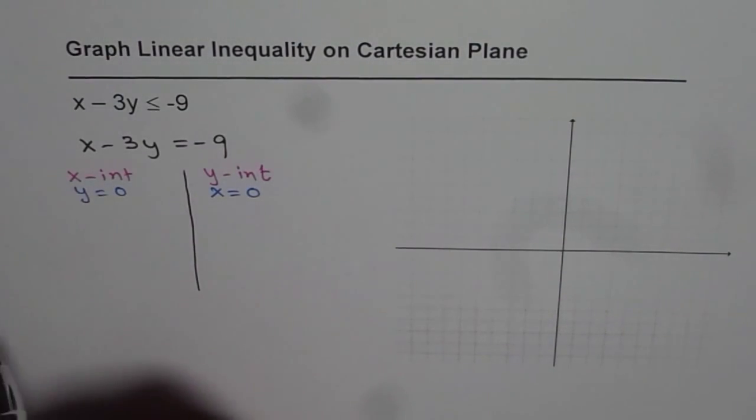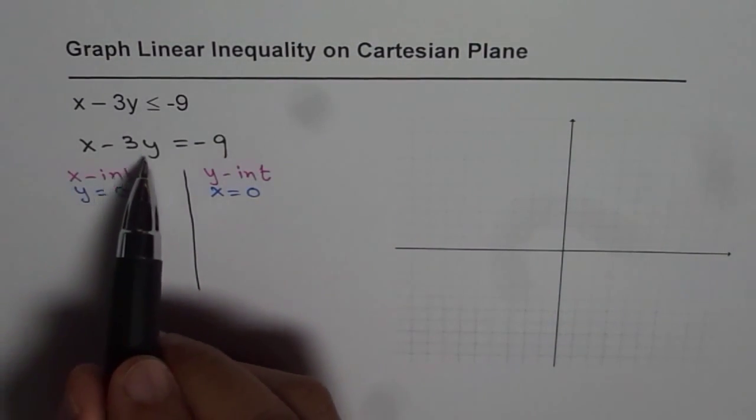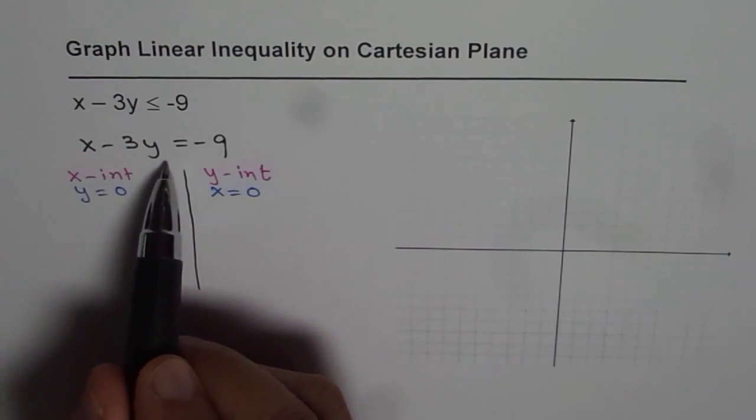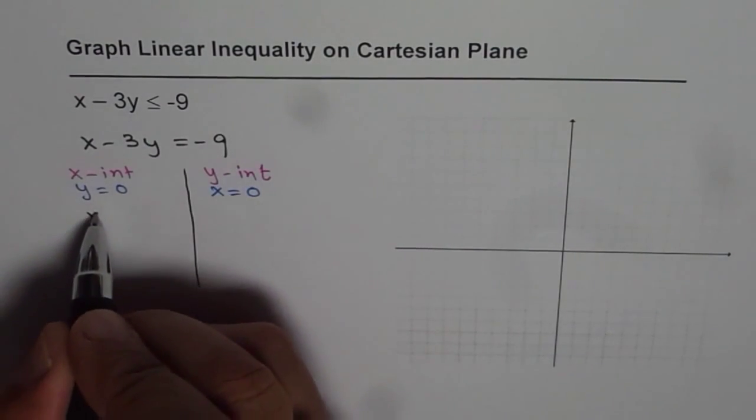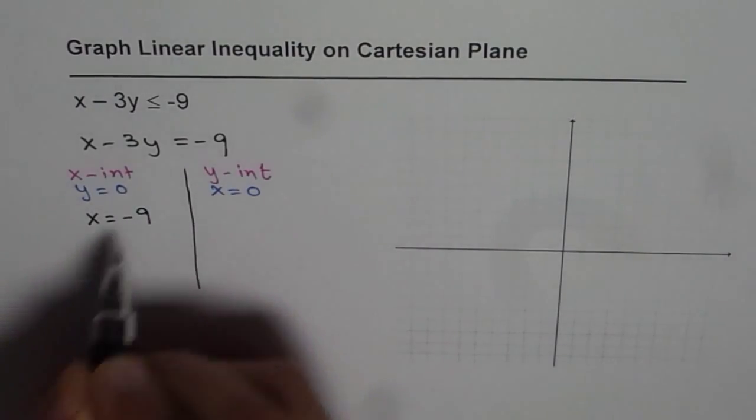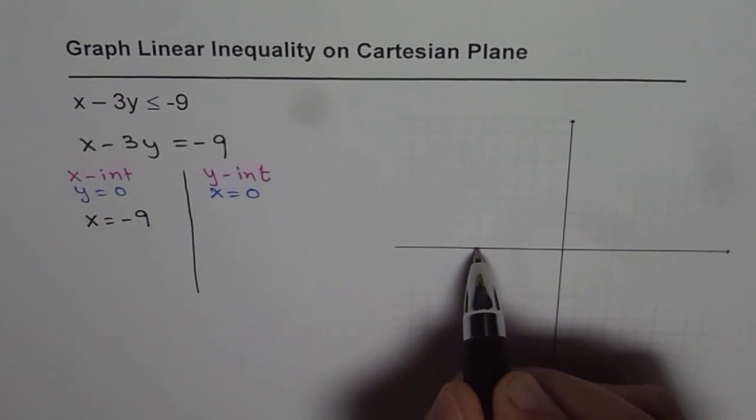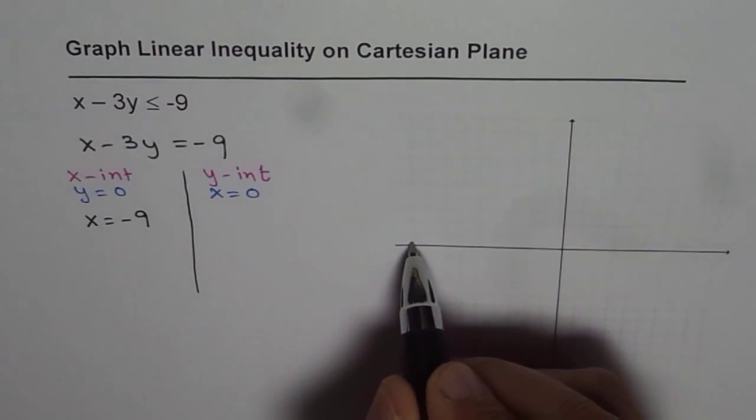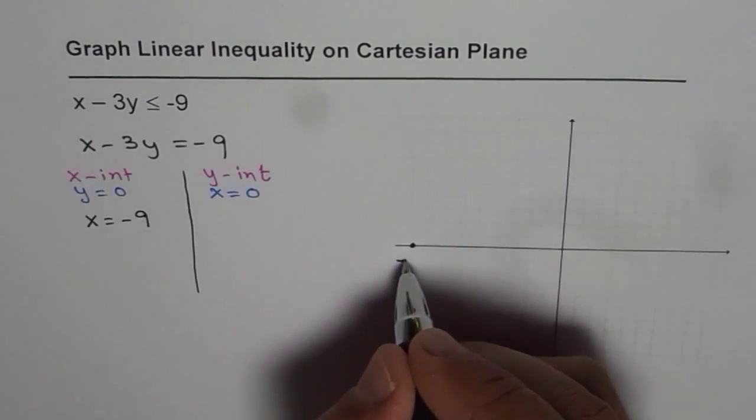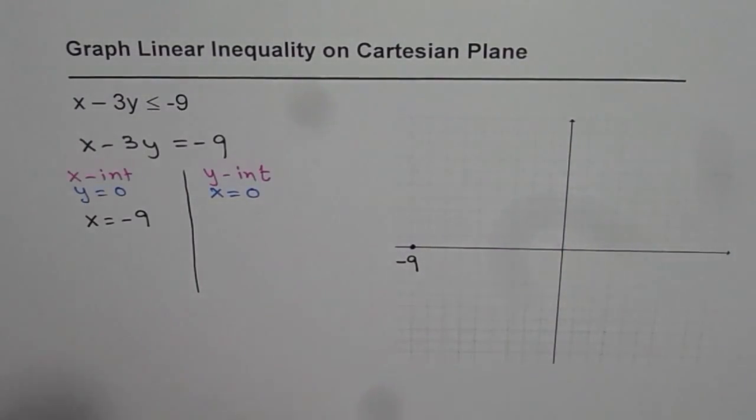If y = 0, then x = -9, so that is your x intercept. So 1, 2, 3, 4, 5, 6, 7, 8, 9, that gives you -9 x intercept.